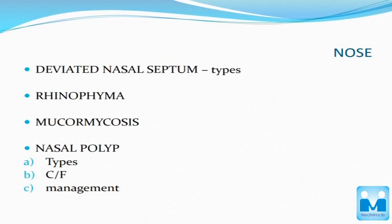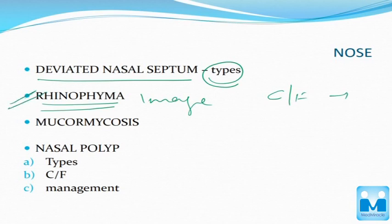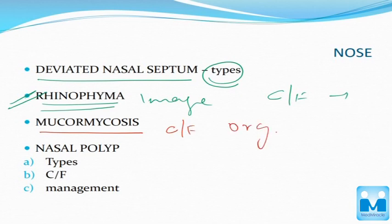Other important topics in the nose include deviated nasal septum — you have to know the types. Another one is rhinophyma — mostly an image-based question or a clinical feature question may come from this topic. You also have to know mucormycosis — the clinical features, organism, and treatment.